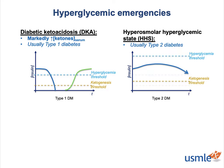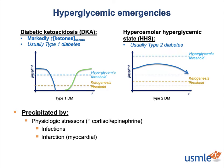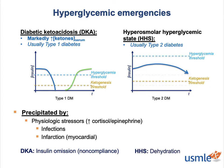DKA and HHS often occur in the context of physiologic stressors like infectious diseases and myocardial infarction that increase the body's stress response. In DKA especially, medication noncompliance is a very common precipitating factor, particularly amongst younger diabetic patients. A key precipitating factor in HHS that's not characteristically an inciting factor of DKA is dehydration — and to understand why, it's necessary to dive into the pathophysiology.